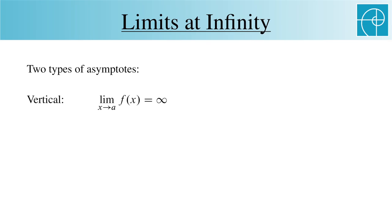For a vertical asymptote, we have a limit as x approaches a, and that's equal to infinity. For a horizontal asymptote, we have a limit as x approaches infinity, and that's equal to a.